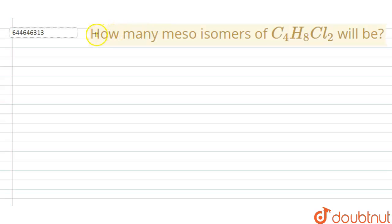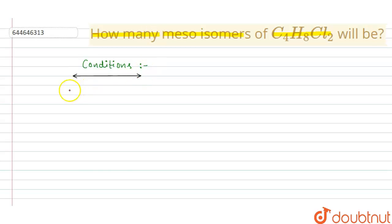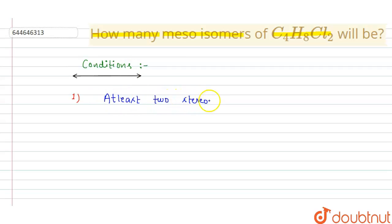Hello students. The given problem is: how many meso isomers of C4H8Cl2 will there be? So first we write the conditions for meso isomers. Condition number one is: at least two stereocenters must be present.